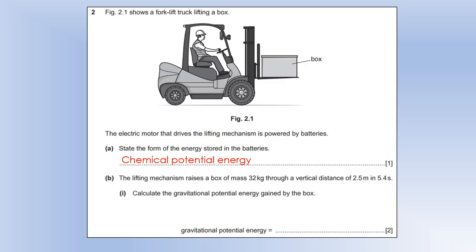The lifting mechanism raises the box of mass 32 kilograms through a vertical distance of 2.5 meters in 5.4 seconds. Calculate the GPE gained by the box. So a change in GPE would be the weight force times the change in height. So we're going to do its mass 32 times by G which has the value of 10 times by the height change of 2.5 gives us 800 joules.